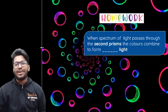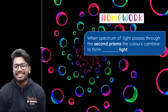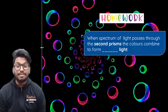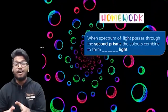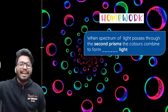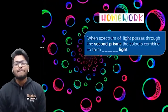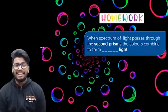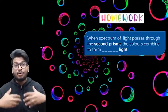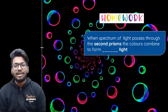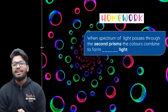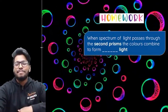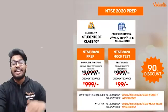The homework question for today — let me know in the comment section: 'When the spectrum of light passes through the second prism, the colors combine to form dash light.' A very simple question — let me know if you were paying attention. That wraps up today's session — a simple but very important topic to revise for your pre-boards and board exams. All the very best for your exams!